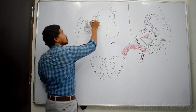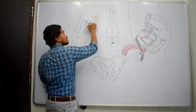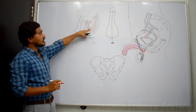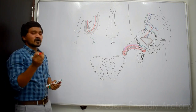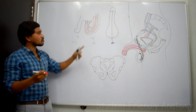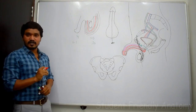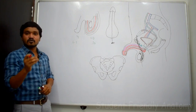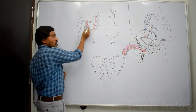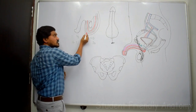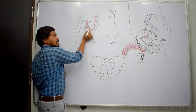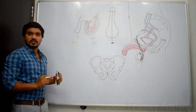Briefly about hydrocele: the testis is surrounded by tunica vaginalis, which has two layers — a visceral layer that intimately covers the testis and a parietal layer outside. Between these two layers there is a very thin film of fluid normally. But if more fluid accumulates between the visceral and parietal layers of tunica vaginalis, that condition is called hydrocele. To tap or remove the fluid, we have to pierce the needle through all the layers: skin, dartos muscle, external spermatic fascia, cremasteric muscle and its fascia, internal spermatic fascia, and then the parietal layer of tunica vaginalis.